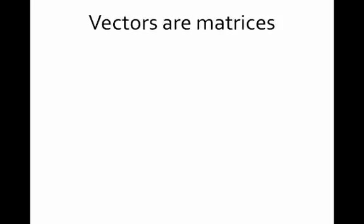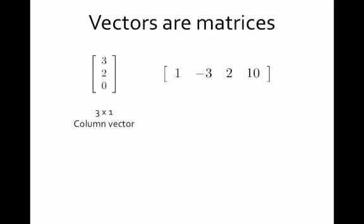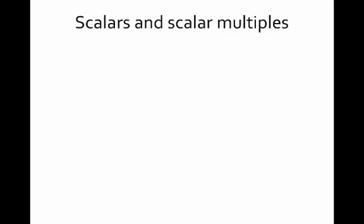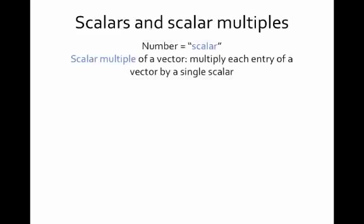Just about everything can be thought of as a matrix, especially thinking ahead to MATLAB. Vectors are matrices — for example, these can be thought of as a 3 by 1 column vector, a 3 by 1 matrix, and the other as a 1 by 4 matrix, which is a row vector. Anything that's not a matrix or a vector — just a single number by itself — is called a scalar.